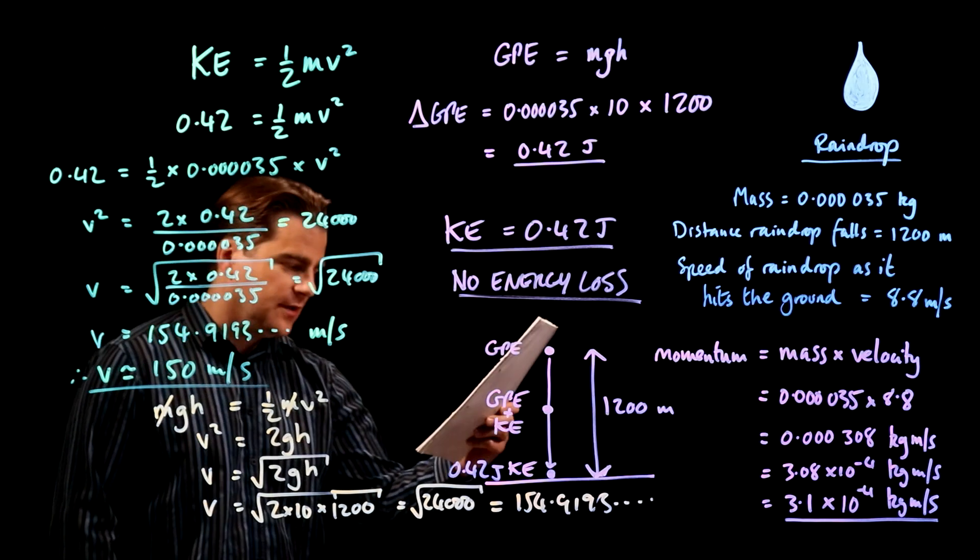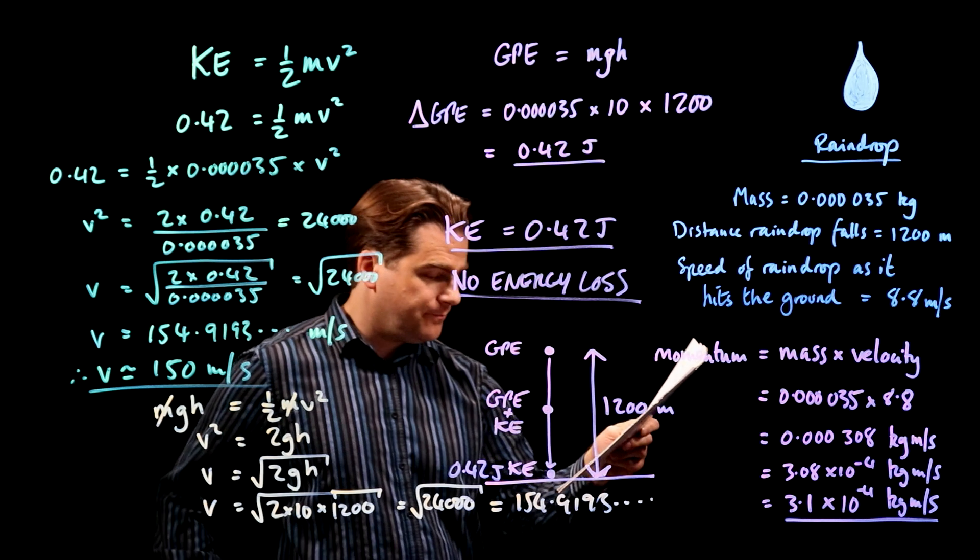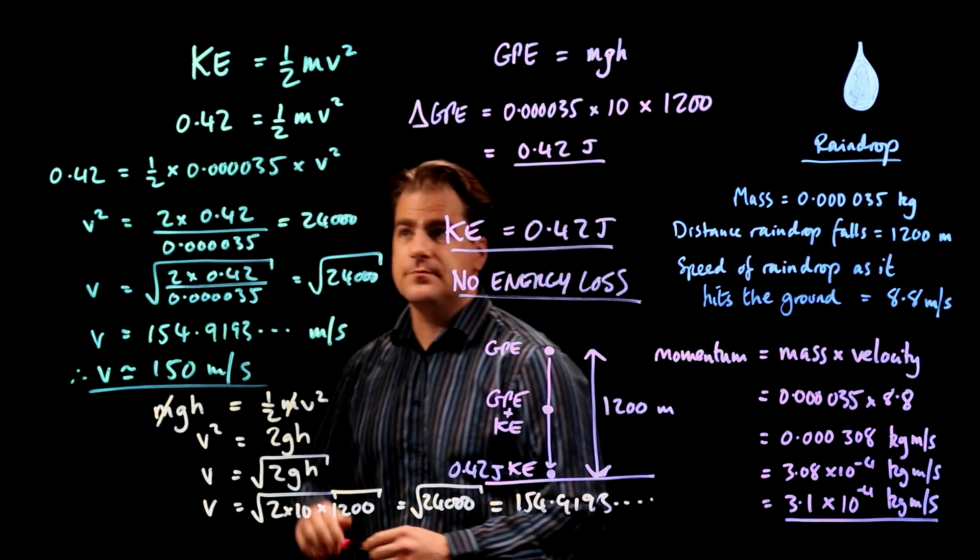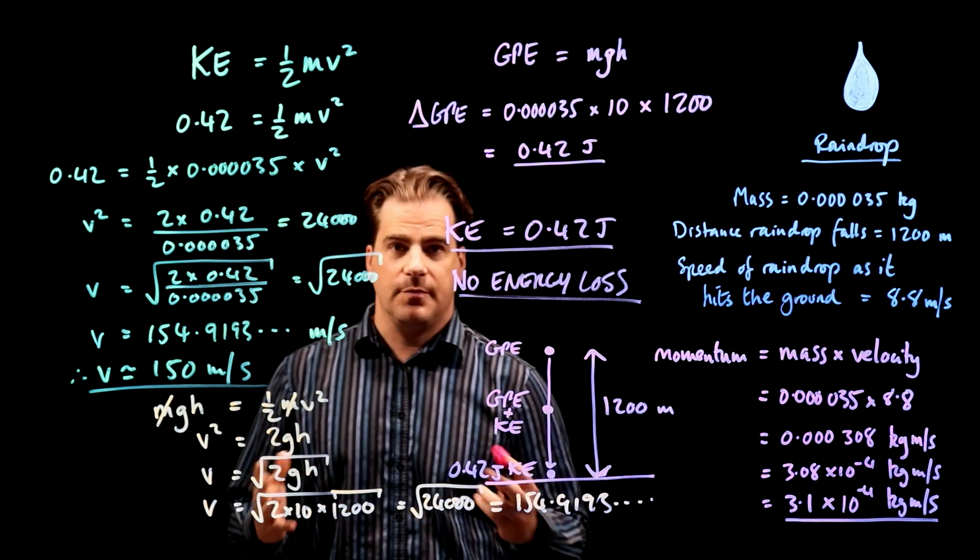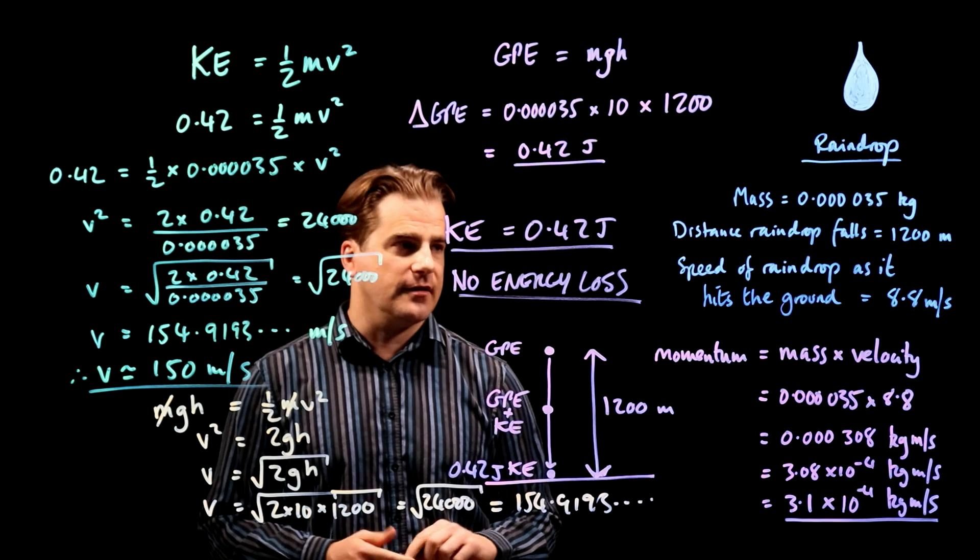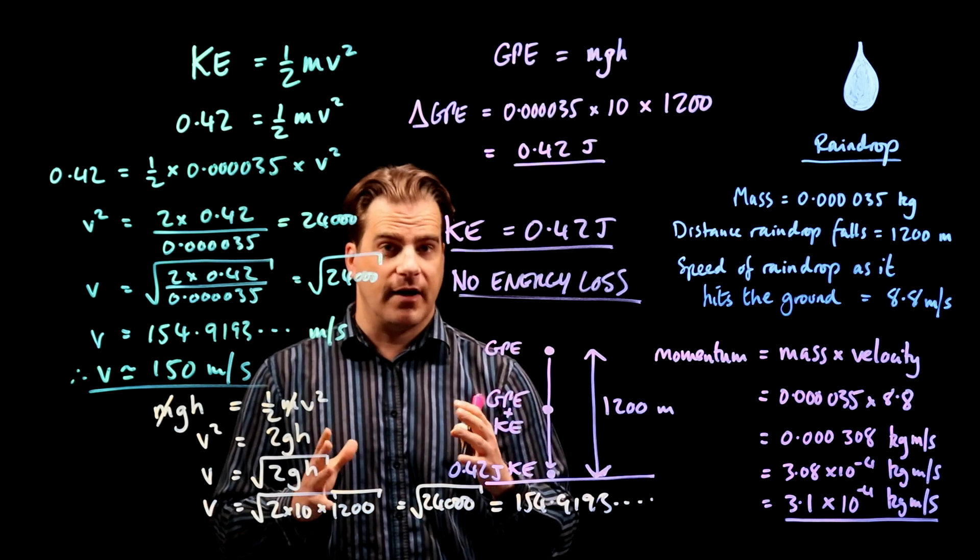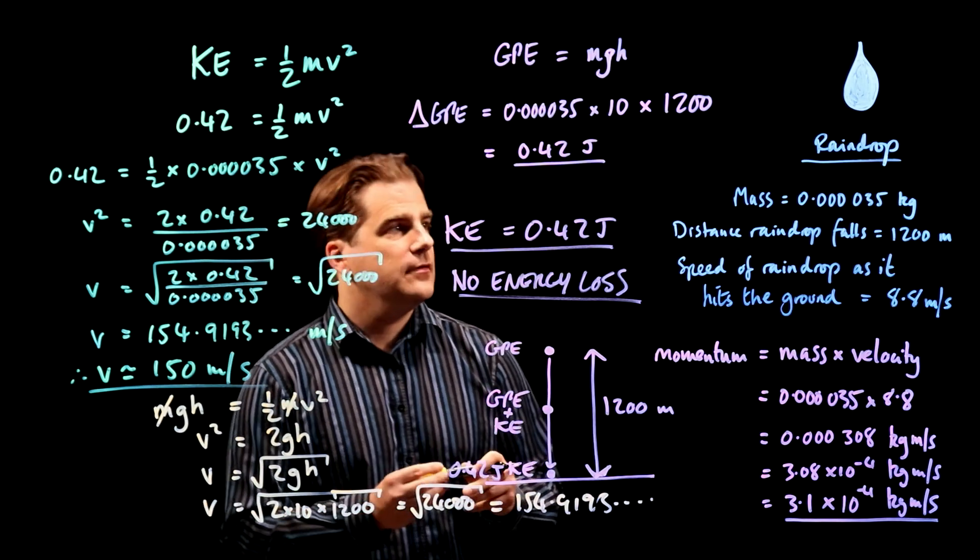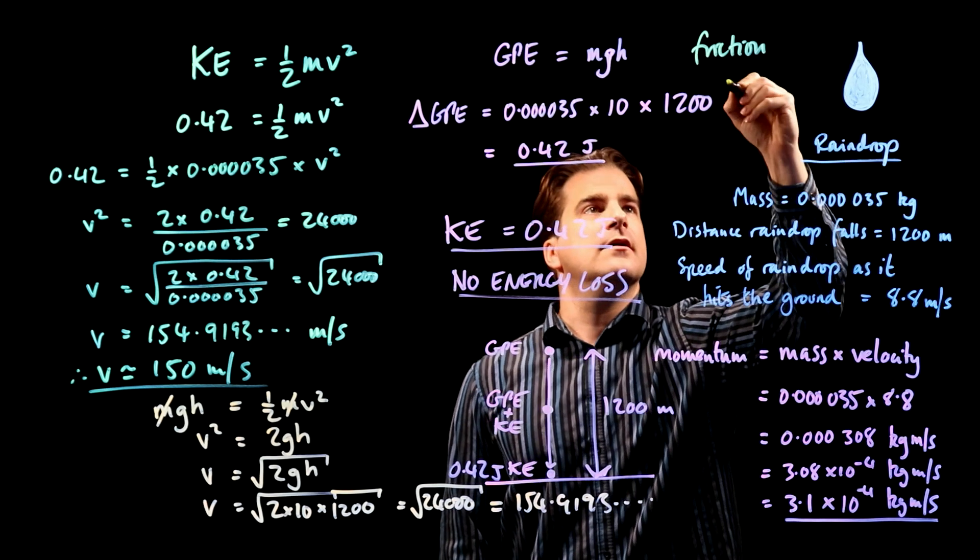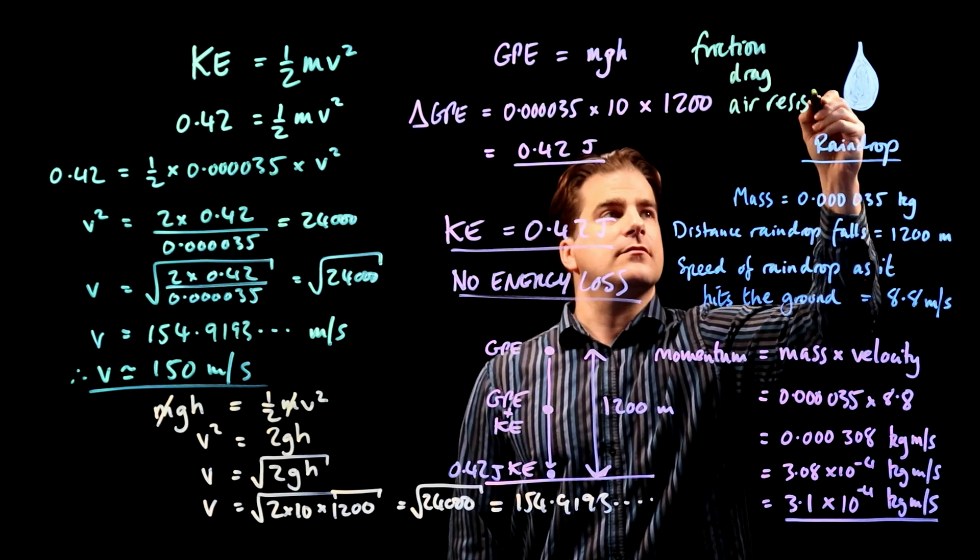Okay. Where are we? Final question. Explain why the actual speed of the raindrop as it hits the ground is much less than 150 meters per second. Okay. Well, we touched on this earlier. The actual speed of the raindrop is 8.8 meters per second. And the speed it would be if there were no air, no energy losses, is 150, nearly 155 meters per second. Okay, so the reason is that as a raindrop falls, there's a whole bunch of air between it and the ground. So there's friction